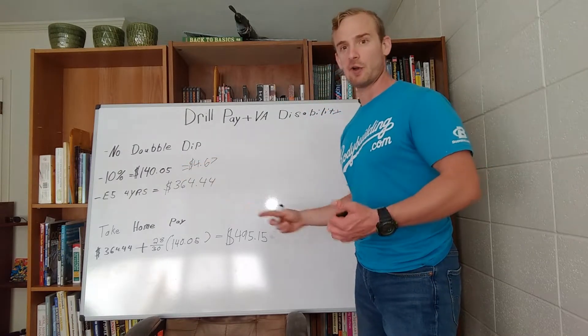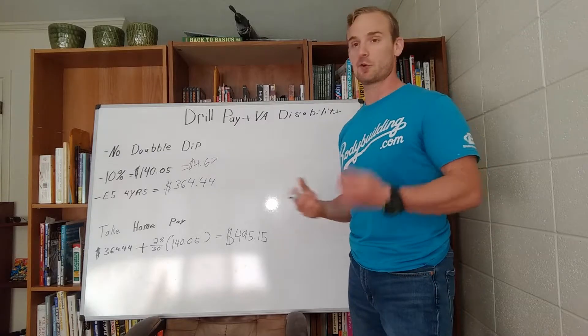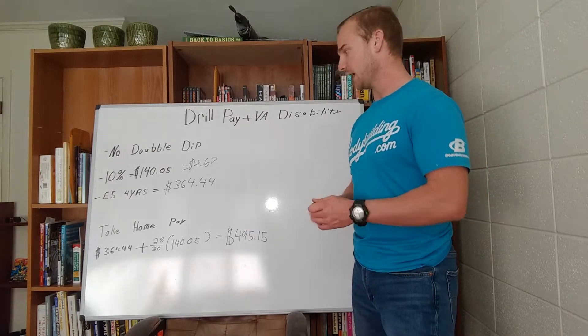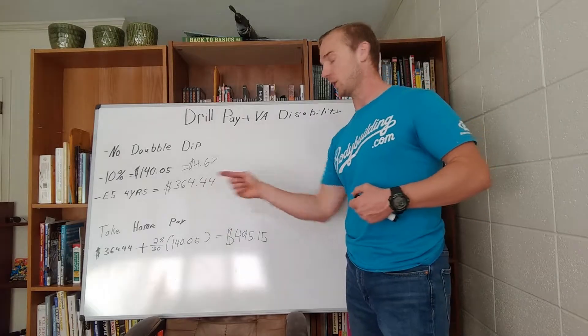So if we prorate that $140 over a 30 day month, we're getting $4.67 per day. Now, on a drill weekend, for the two days that I'm there, I'm getting $364.